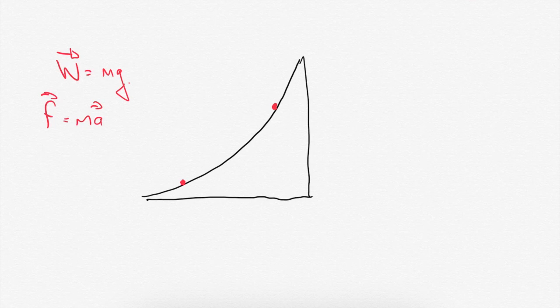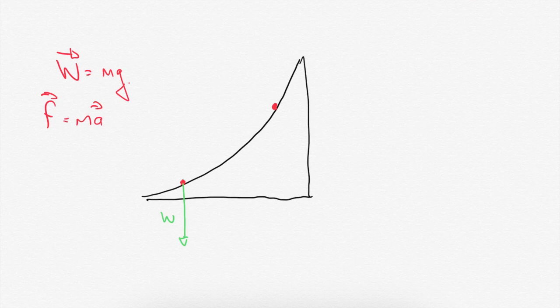Let's take a green pen and call this W — the weight of the ball. It doesn't change. We can look at the weight and draw that vector at both the top and the bottom and say this is W. Hopefully they've been drawn the same length. The weight of the ball doesn't change, so the downward force should be the same, and the acceleration should be the same.